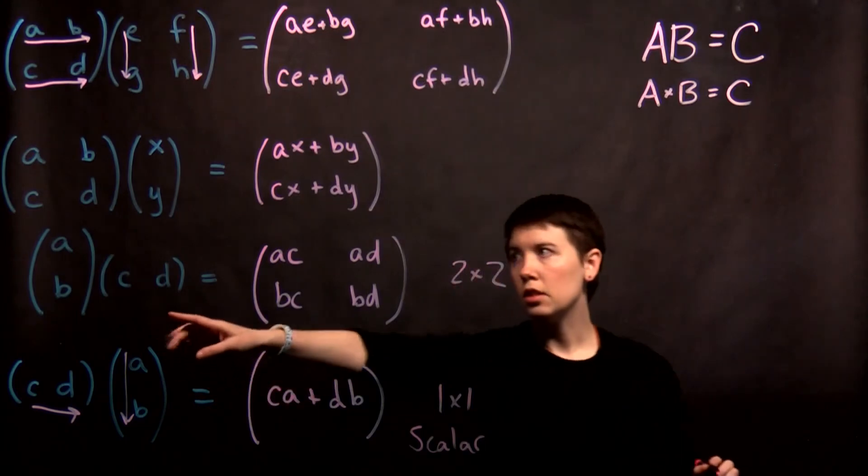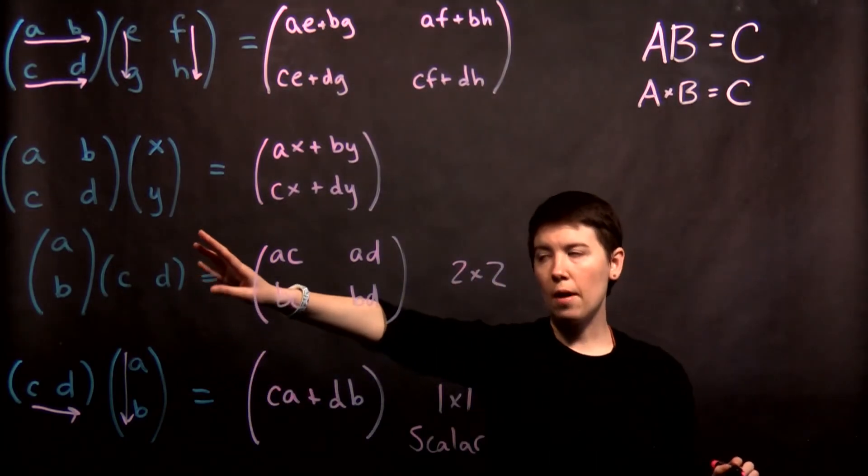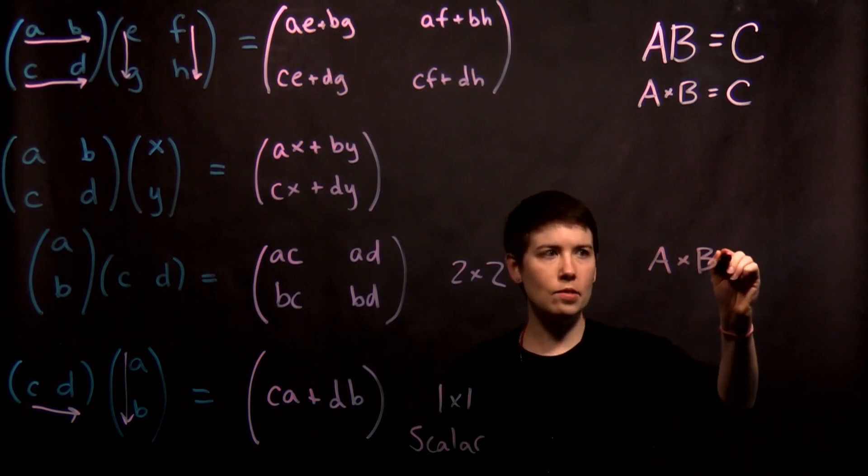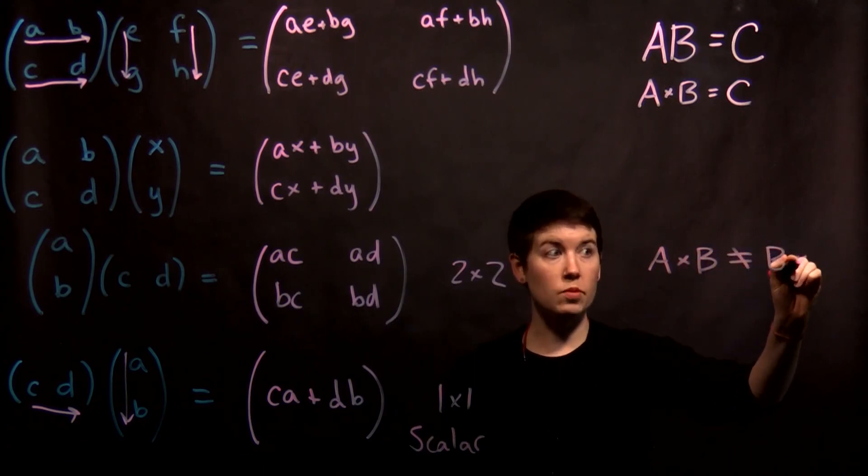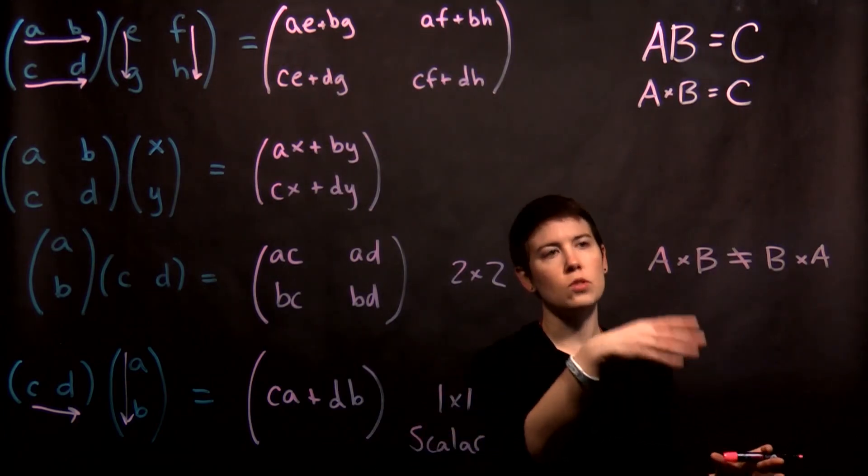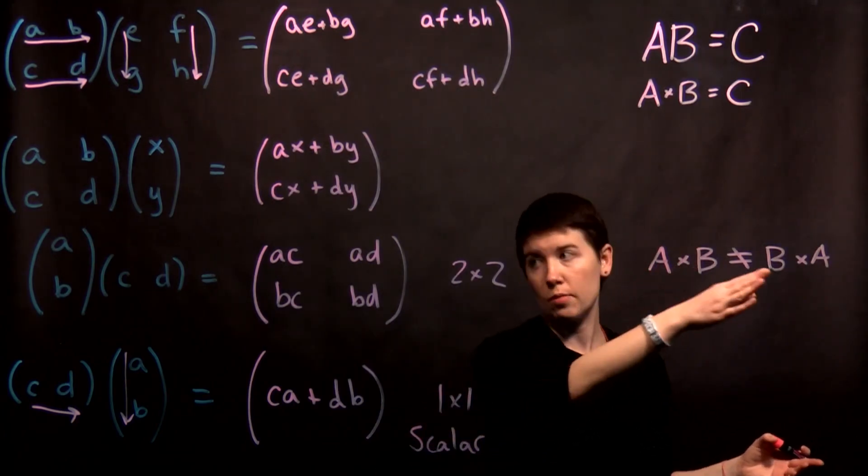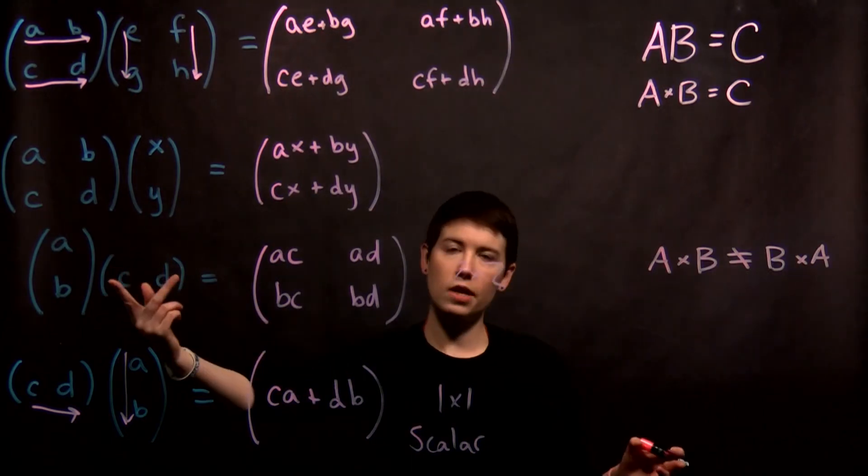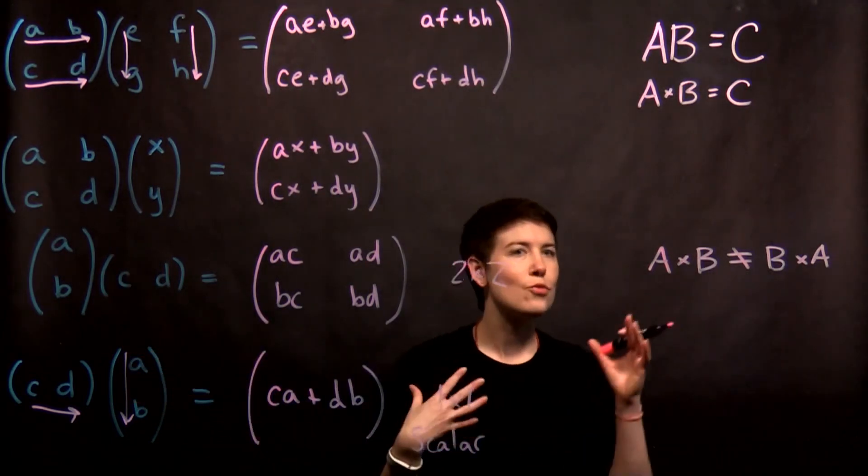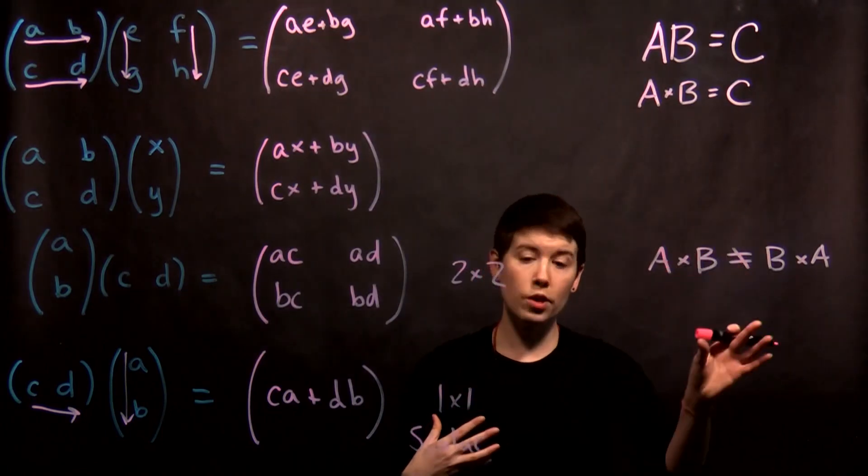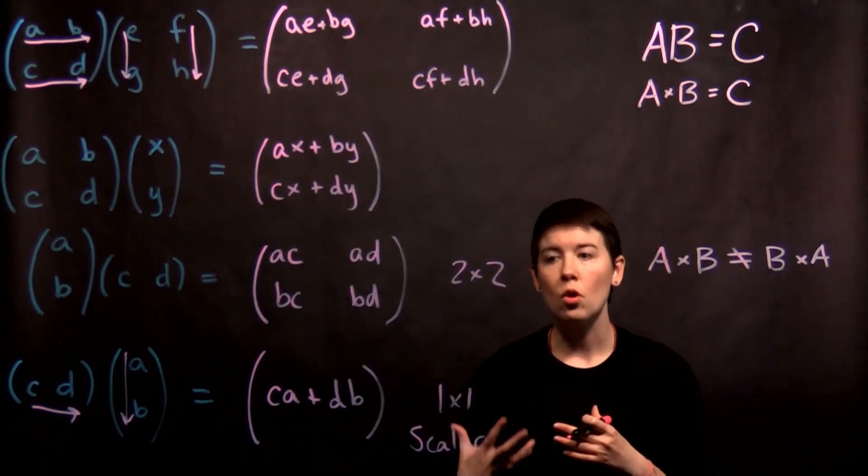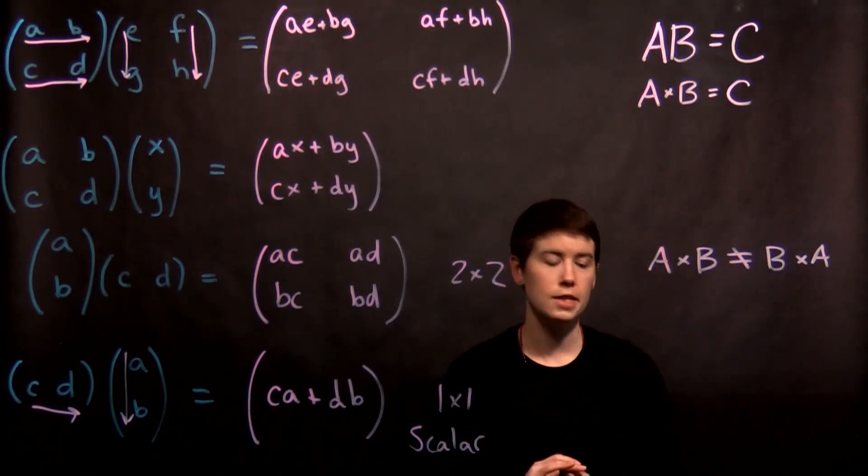So the key here is to notice that A times B is not necessarily the same as B times A. In general it is not. And so when these were integers, for instance 2 times 3 is the same as 3 times 2, but in this case when you change the order of matrices or vectors that you're multiplying, you don't get the same thing back. So it's really important that you keep it in the right order and you understand as we're going through quantum mechanics what order things are meant to be multiplied in.